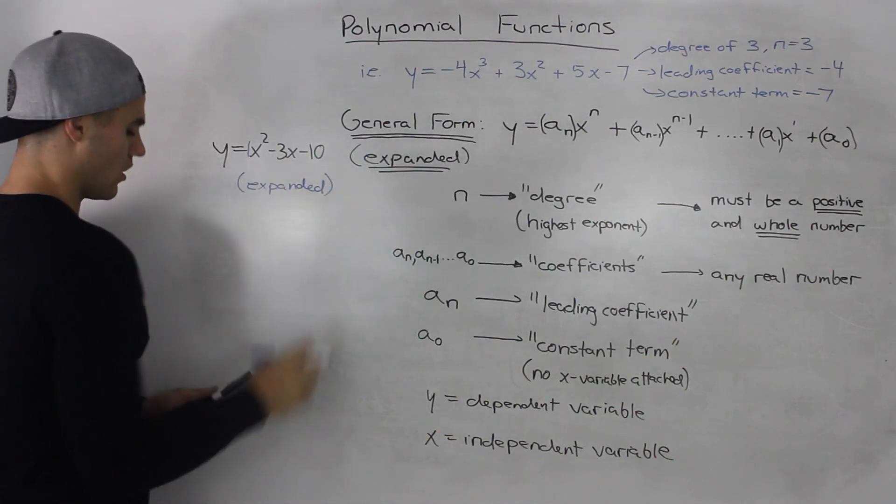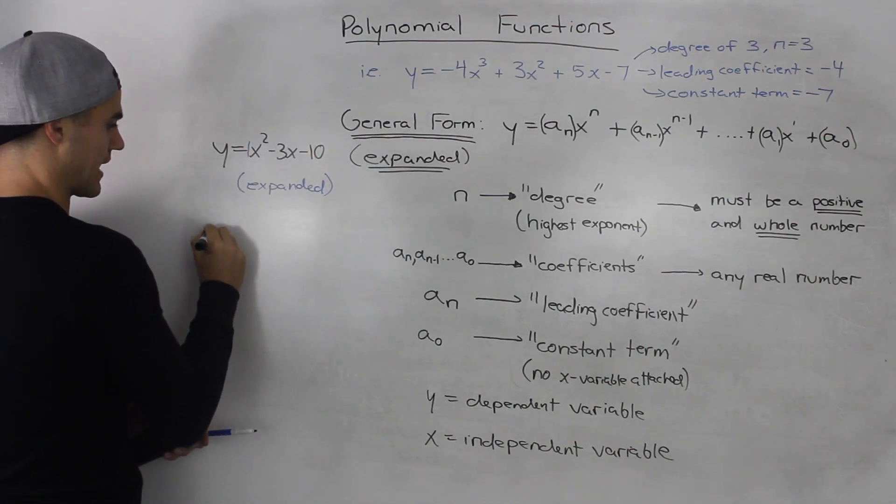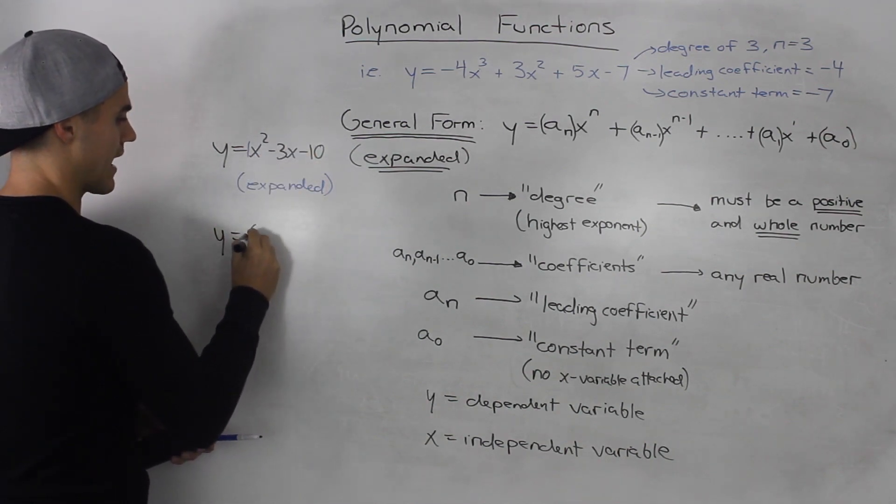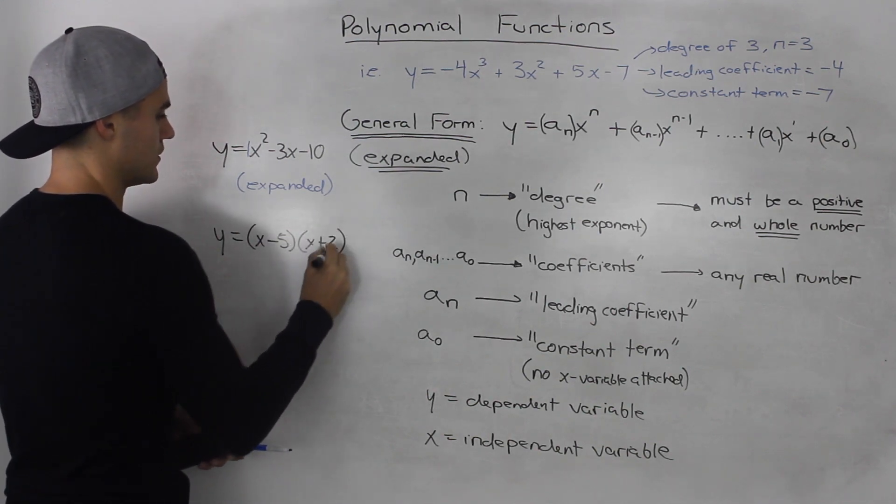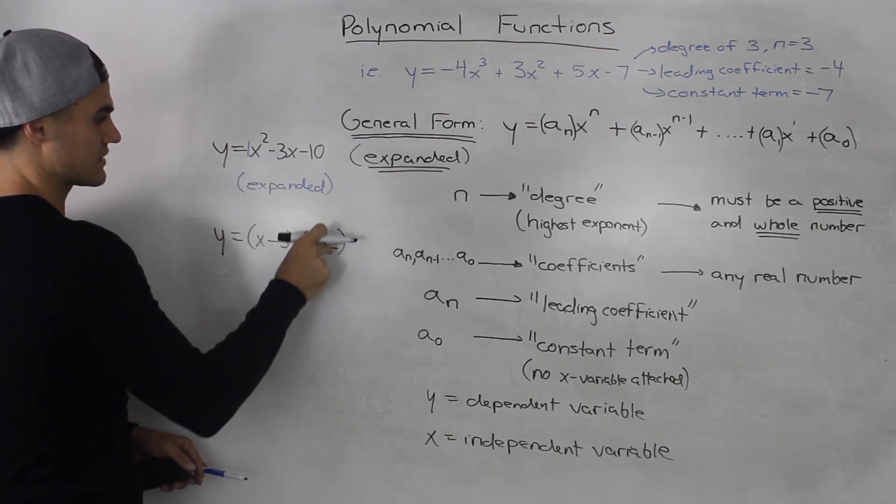However, we can also write this polynomial function as y equals (x minus 5)(x plus 2). And that's the same thing. If you were to take this and FOIL it...